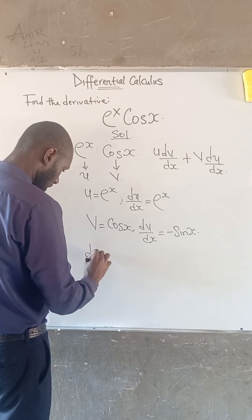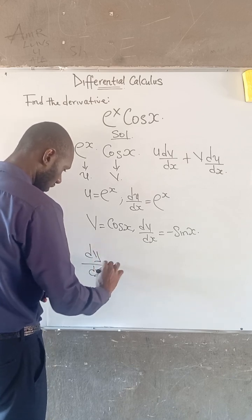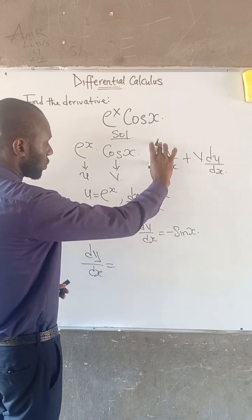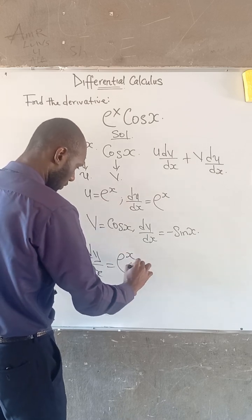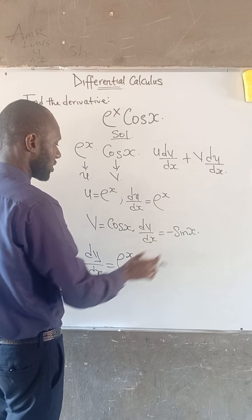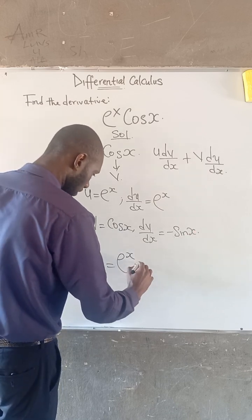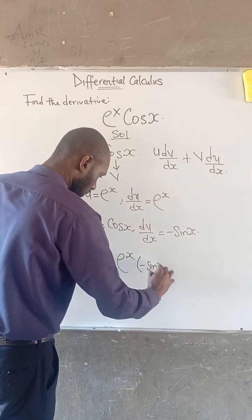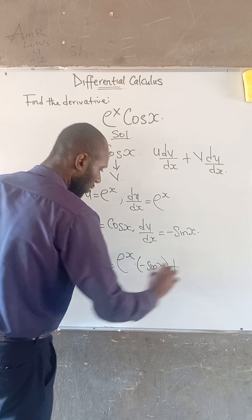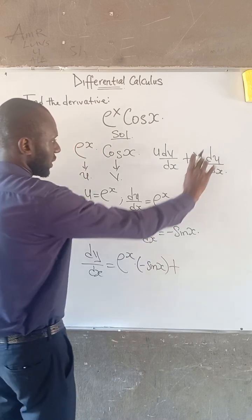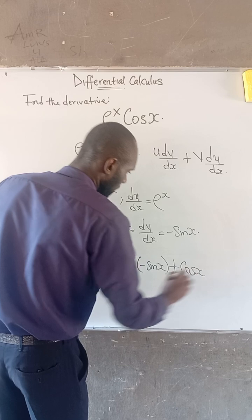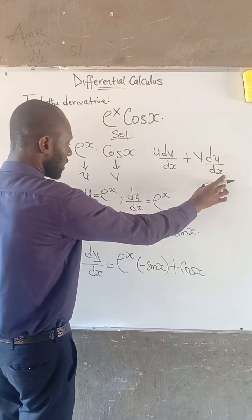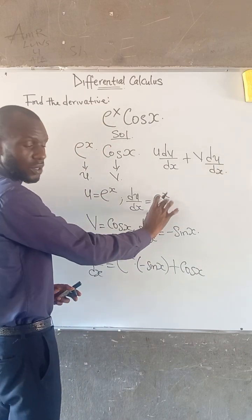So therefore, we have that dy over dx is equal to u, given as e to the power of x, multiplied by dv over dx, given as minus sin x, plus v, given as cos x, and du over dx, given as e to the power of x.